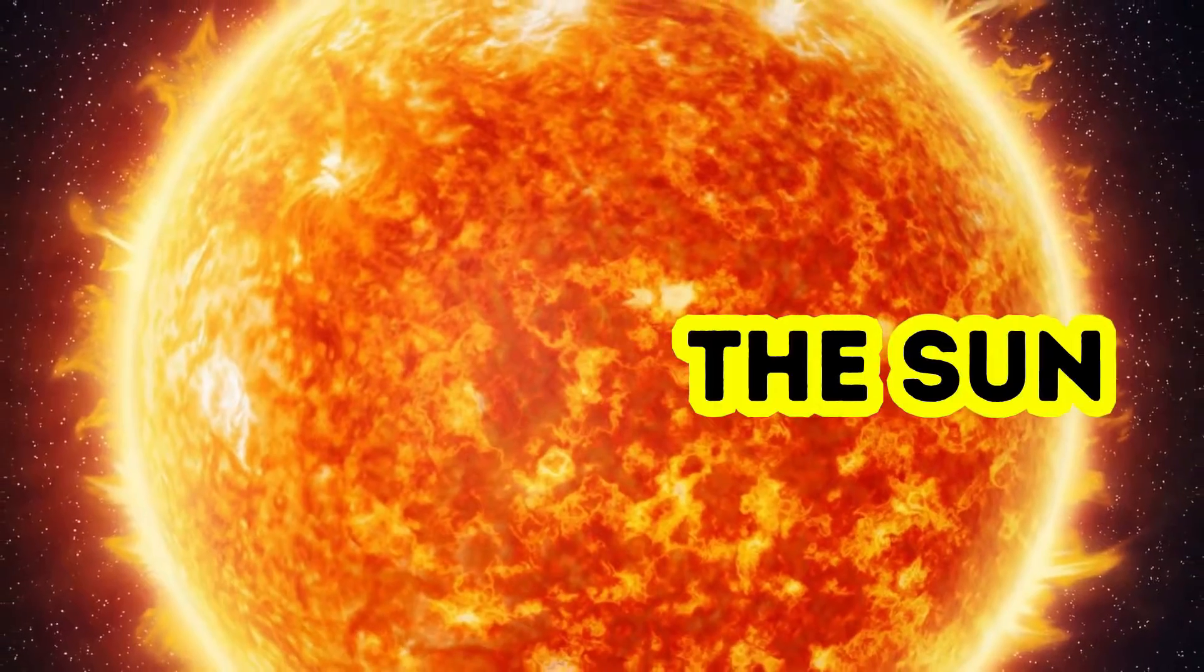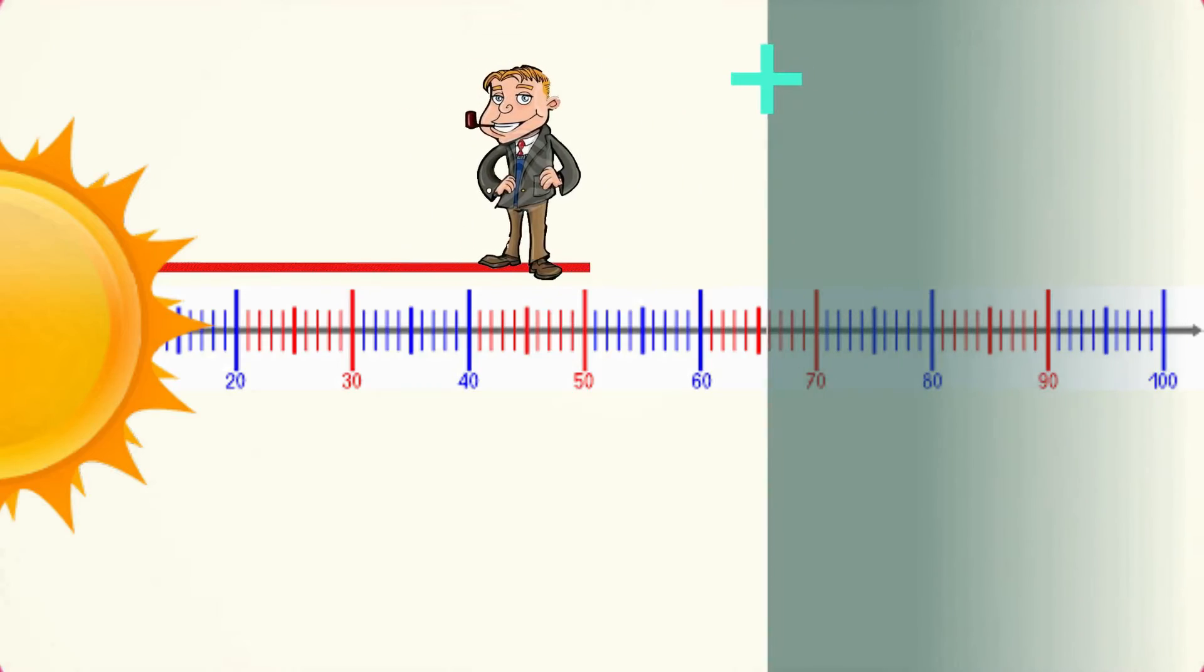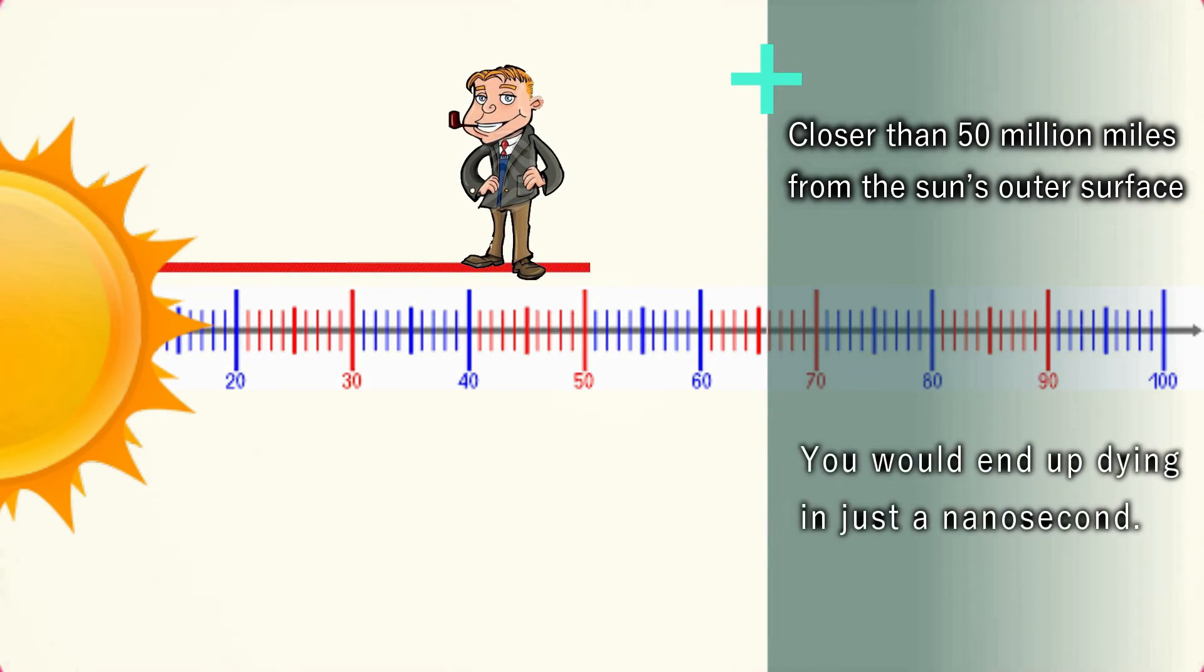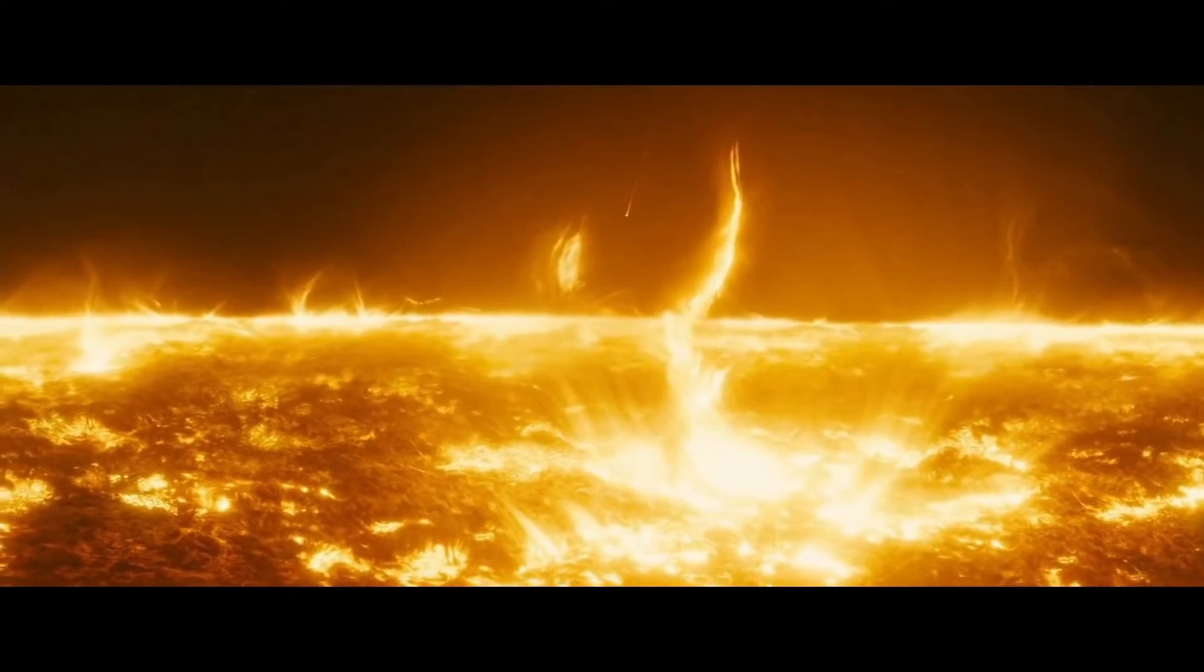Let's start with a softball: the Sun. Our sun would obviously fry you up immediately. Or if somehow you reach any closer than 50 million miles from the sun's outer surface, you would end up dying in just a nanosecond and vaporize really, really fast. Not a good place to visit.